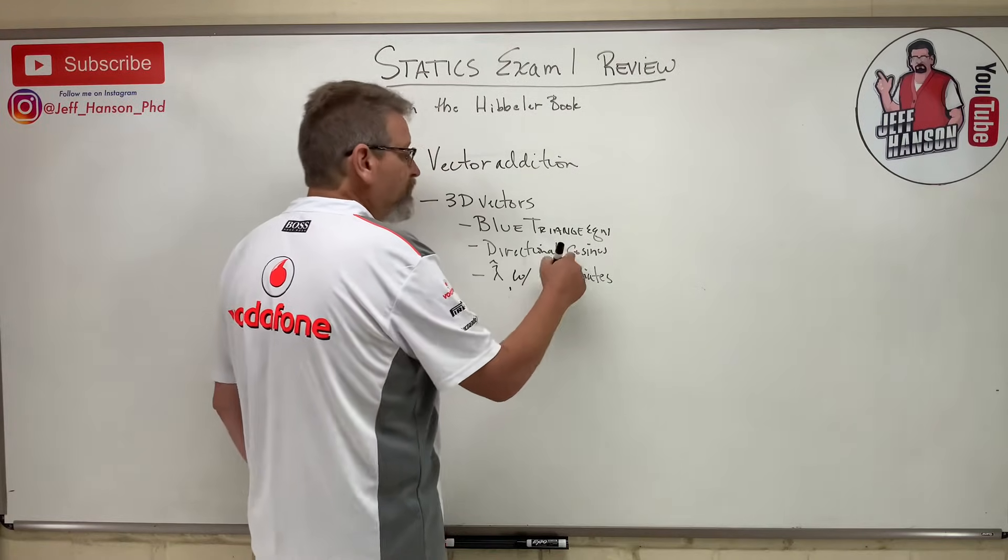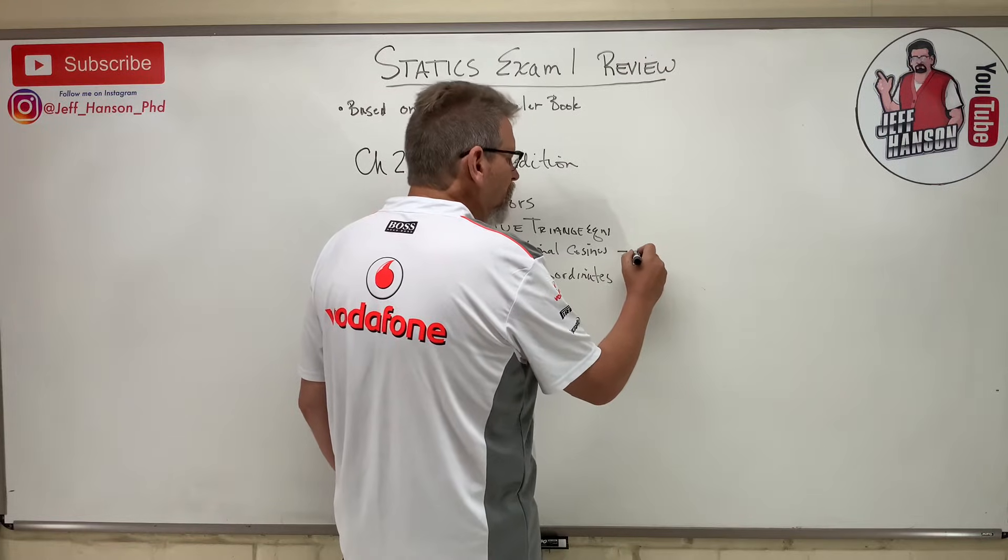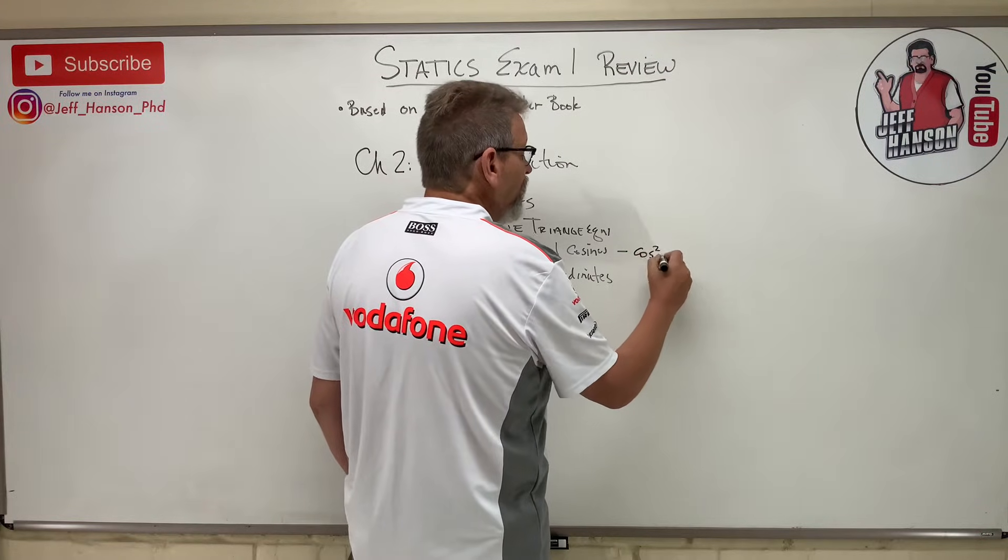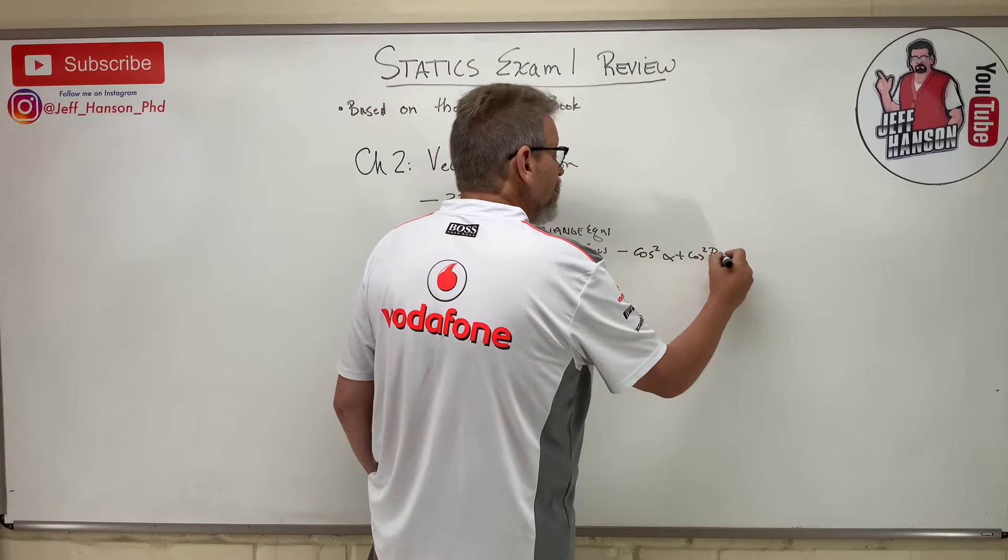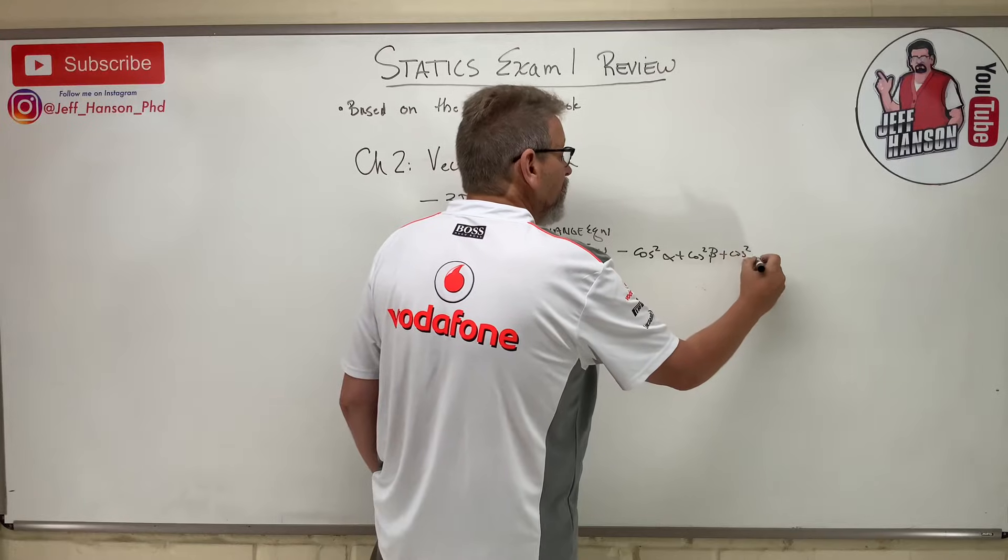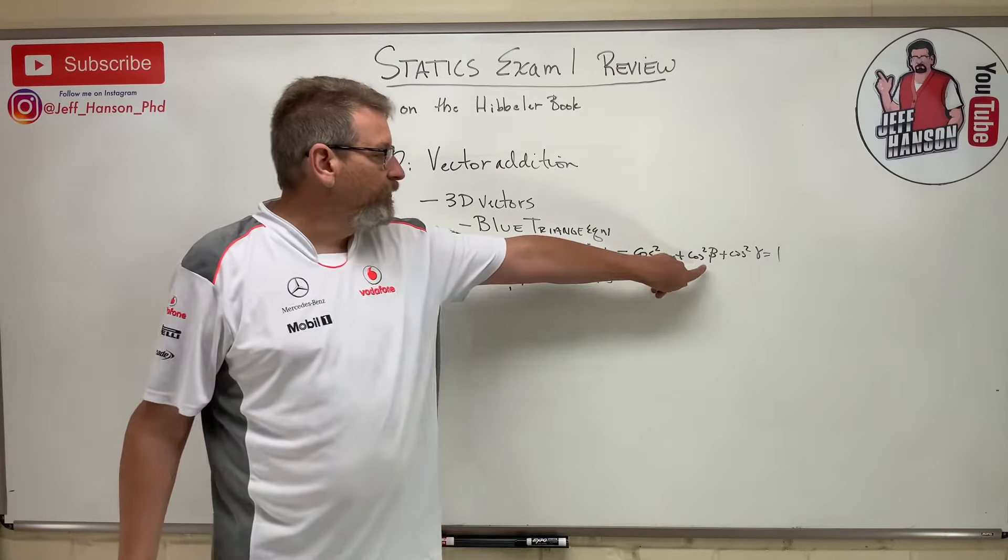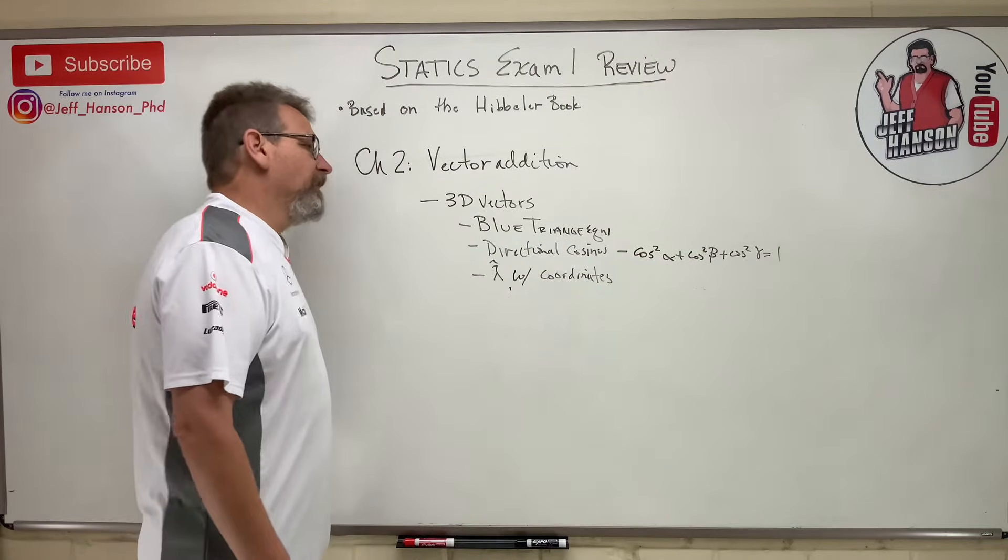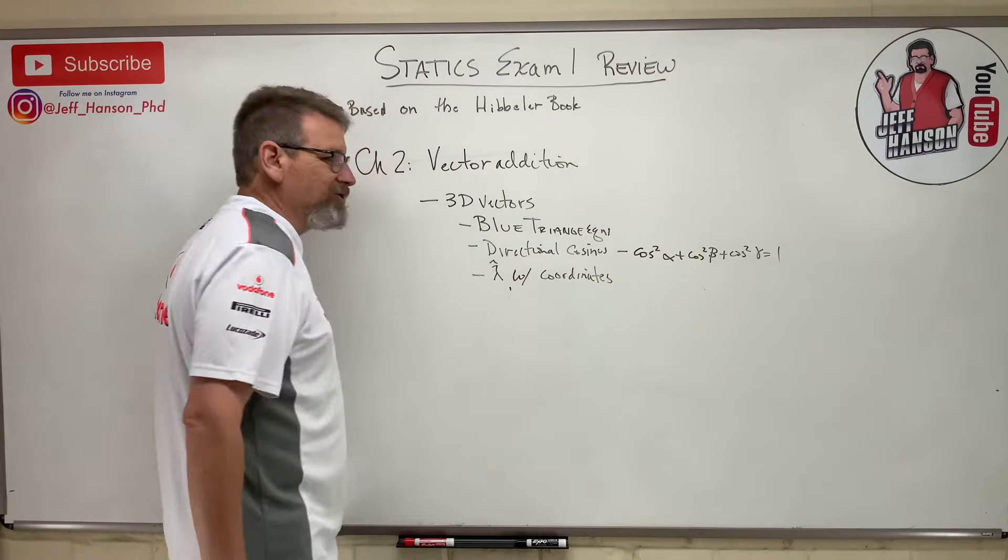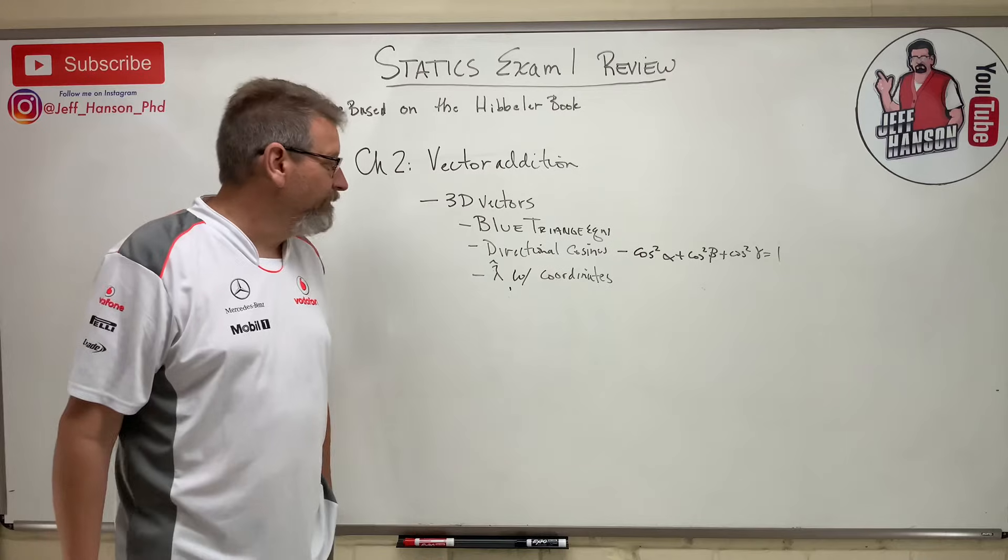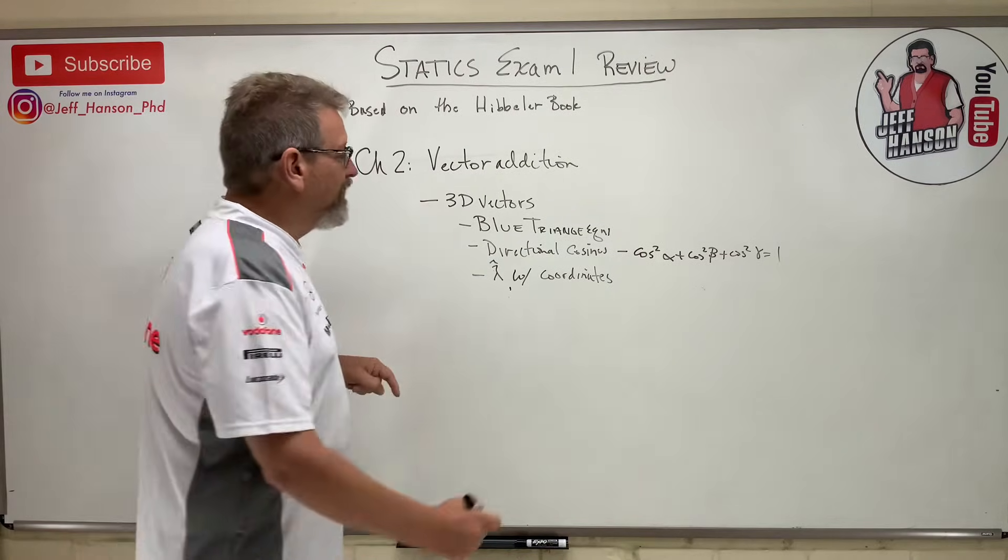What if I gave you one that had all three different kinds of vectors in it and asked you to add them together and maybe find the directional cosine angles of the resultant vector? You need to remember that other little trick for directional cosines: cosine squared alpha plus cosine squared beta plus cosine squared gamma equals one. So if they only gave me two of those, I could come up with the third one.